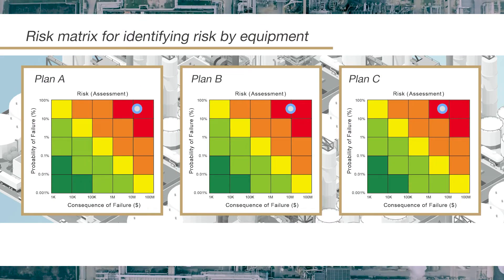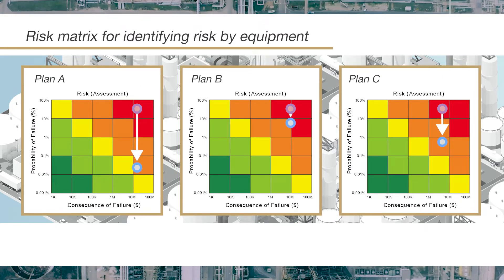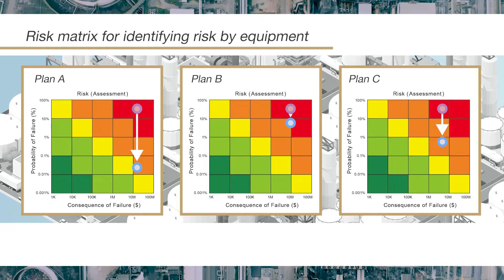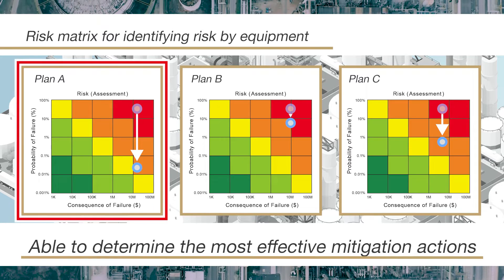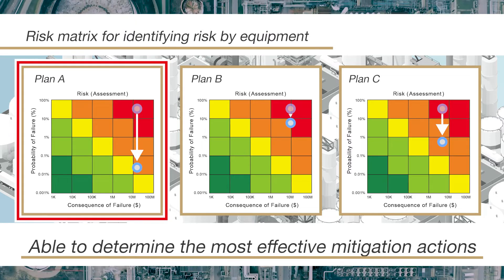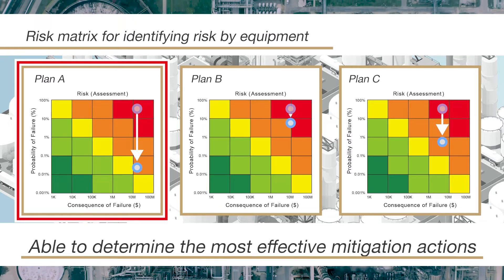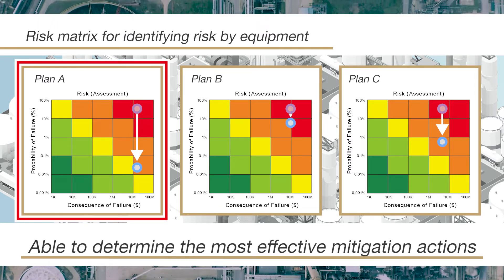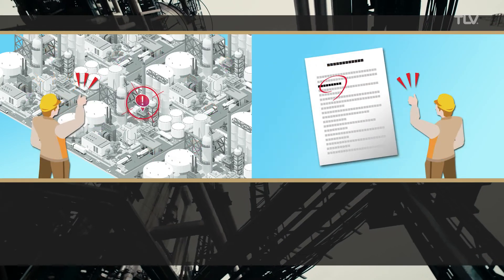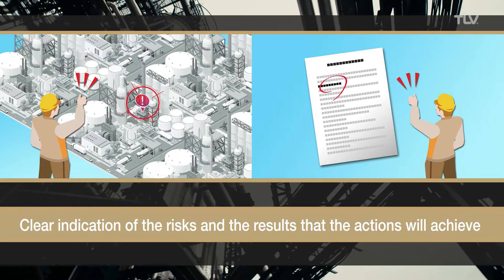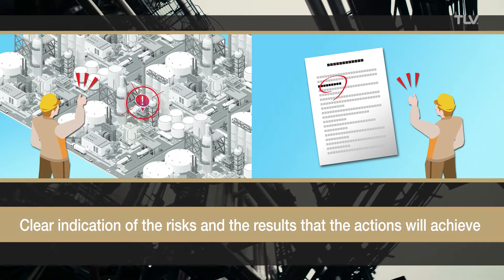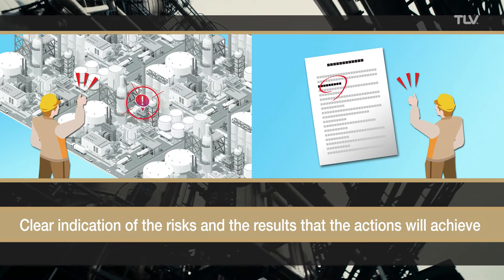The effect of potential mitigation actions can be simulated using the same methodology. These simulations allow us to determine in advance which mitigation action will be the most effective. By implementing SSRM, the risks that the STEAM system faces and the results the risk mitigation actions will produce are made clear.